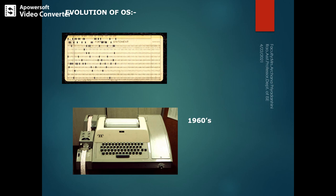The first generation was from 1946 to 1959. The main features were vacuum tube technology: unreliable, very costly, generates a lot of heat, very slow processing, slow input and output devices, non-portable, and consumes a lot of electricity. The computers of this generation included ENIAC, EDVAC, UNIVAC, IBM 701, and others. These computers were very huge, occupying an entire lab, generating lots of heat and consuming a lot of electricity.